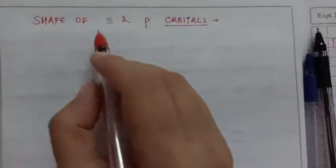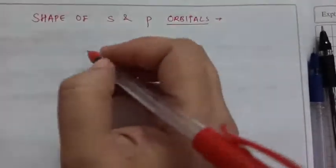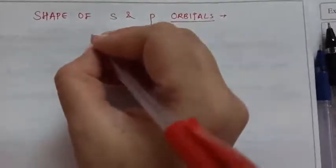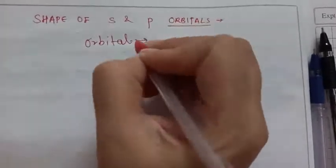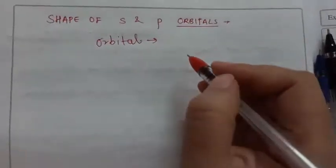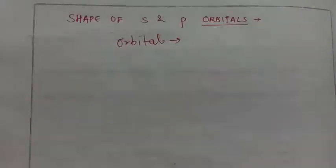Now in this video we will be talking about the shape of S and P orbitals. So what is an orbital? We already know orbital is a space around the nucleus where the probability of finding an electron is maximum.